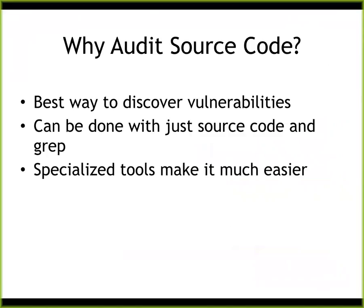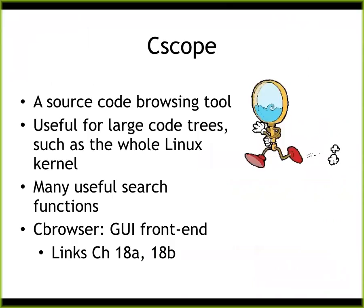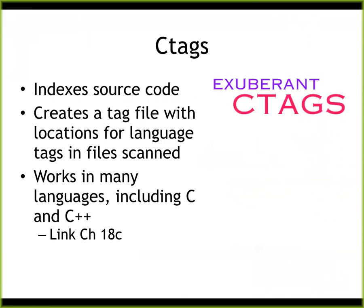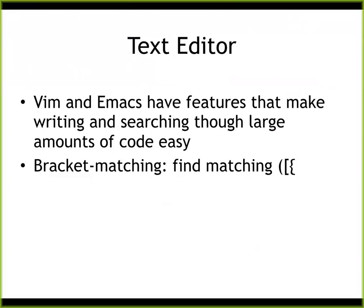If you have the source code, you can just use grep to look for patterns. There are tools a bit better than that. Cscope has been around a long time and can let you search through huge things like the whole Linux kernel. Ctags is another one that will index the source code so you can search for similar patterns and track where things are referenced. Command-line text editors handle large documents well and many have bracket matching to spot mismatched brackets.